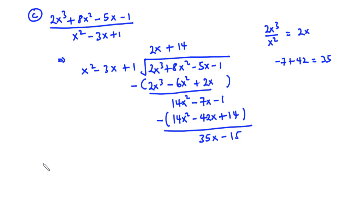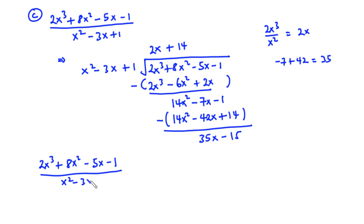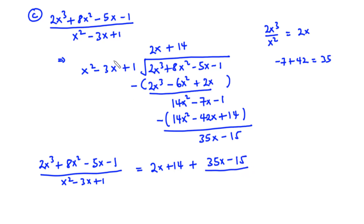So it follows that 2x cubed plus 8x squared minus 5x minus 1 divided by x squared minus 3x plus 1 is equal to the quotient 2x plus 14, plus the remainder 35x minus 15 divided by the divisor x squared minus 3x plus 1.